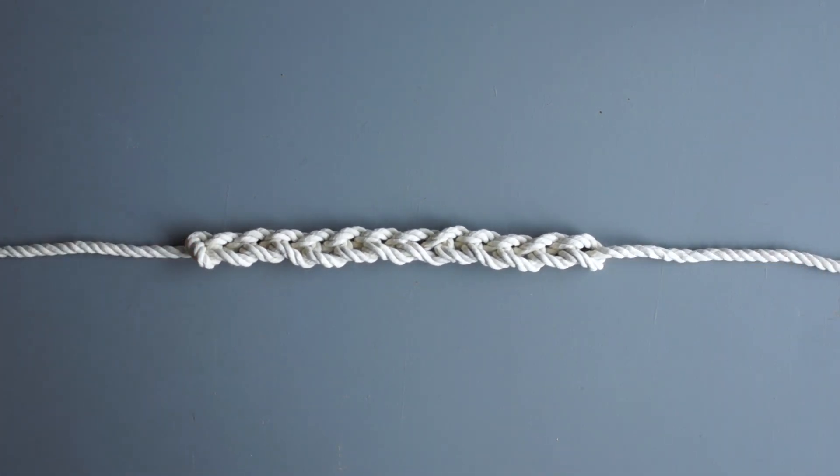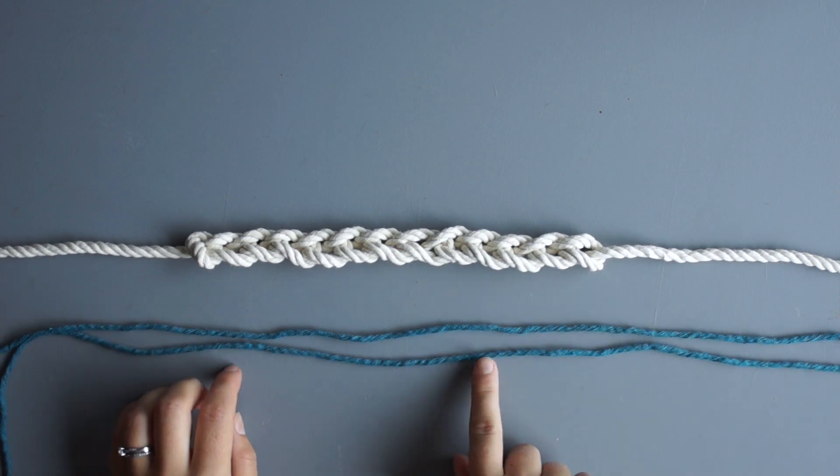Using the same process we will now create a chain sinnet using both the 6mm rope and 3mm string in the color peacock.